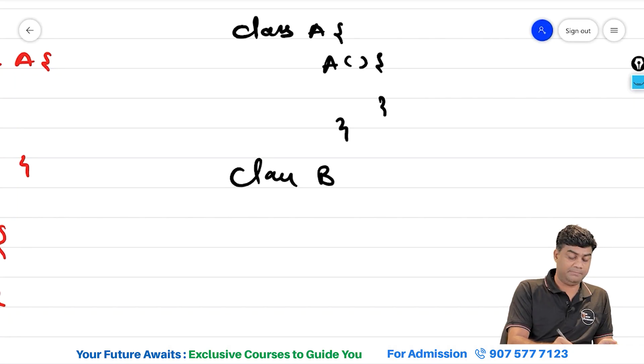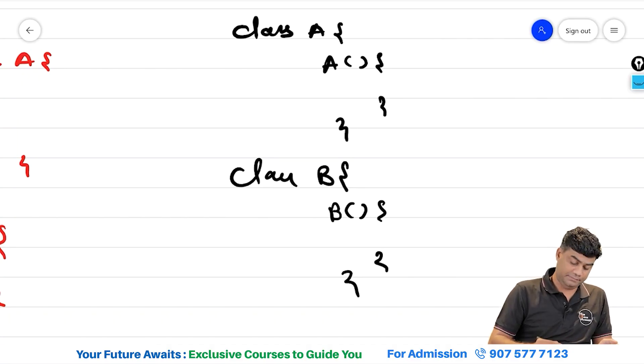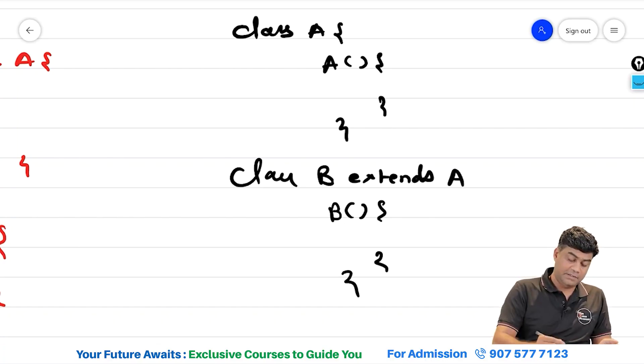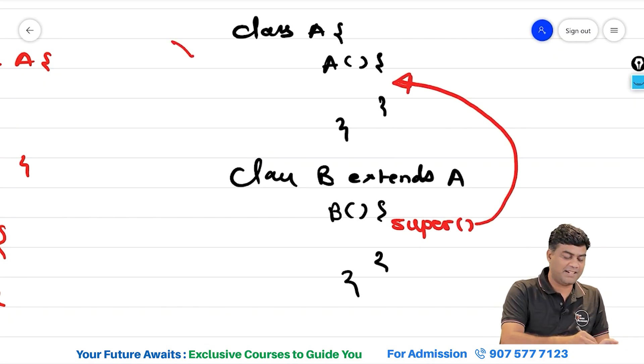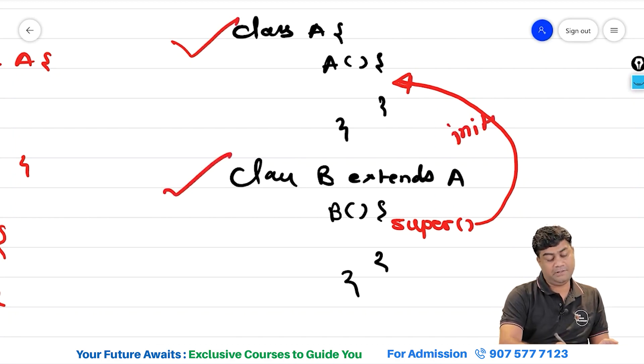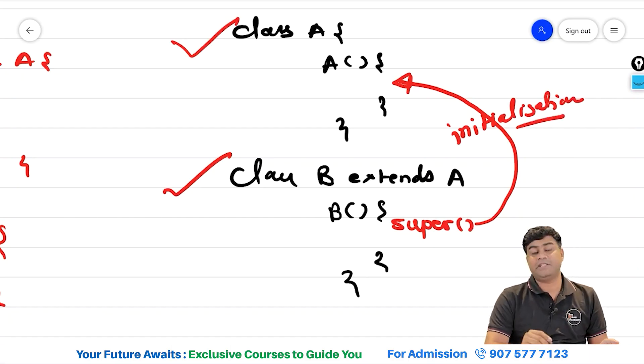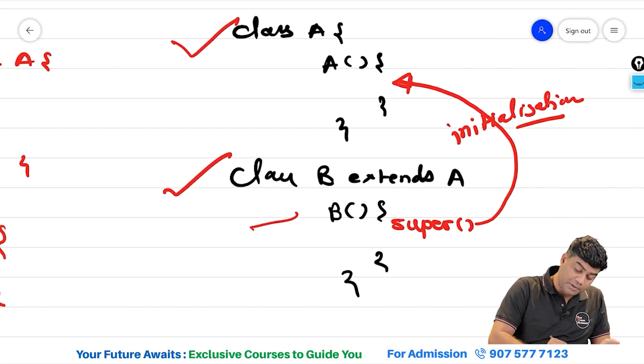Here, it is class B. If you look at this, here there will be one keyword called super, which will be calling this automatically. You need to write class A, class B, automatic initialization will be happening. This is what the role of constructor in inheritance.